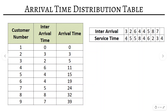We determine the number of customers by counting the service times given — there are nine service times available, so there must be nine customers. I have assigned inter-arrival time sequentially: three, two, six, four, four, five, eight, seven. Now we calculate arrival time for each customer. The first customer's arrival time is zero. For the second customer, inter-arrival time is three, so zero plus three equals three. Continuing: three plus two equals five, five plus six equals eleven, eleven plus four equals fifteen, fifteen plus four equals nineteen, and so on.